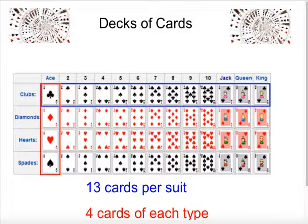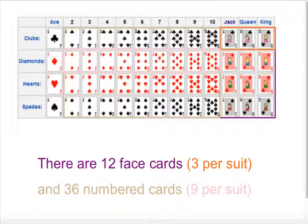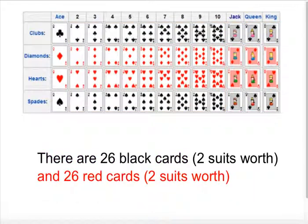Now, decks of cards — please take a second look at the deck of cards; pause it if you would, just to give yourself an idea of how it works if you've never seen one before. Every single suit goes ace to king for a total of 13 cards, so four suits times 13 cards — clubs, diamonds, hearts, and spades. There are 12 face cards (three per suit), 36 numbered cards (nine per suit, two through ten), aces play their own specific role, 26 black cards, and 26 red cards.